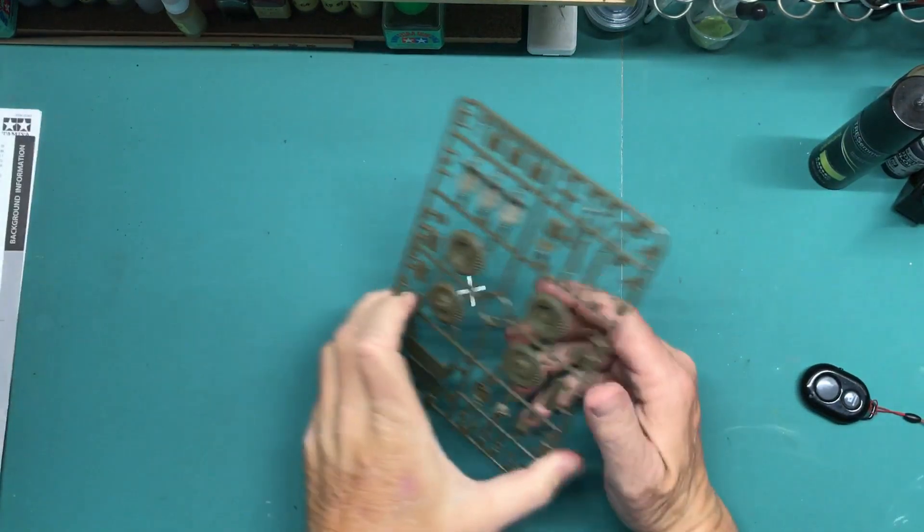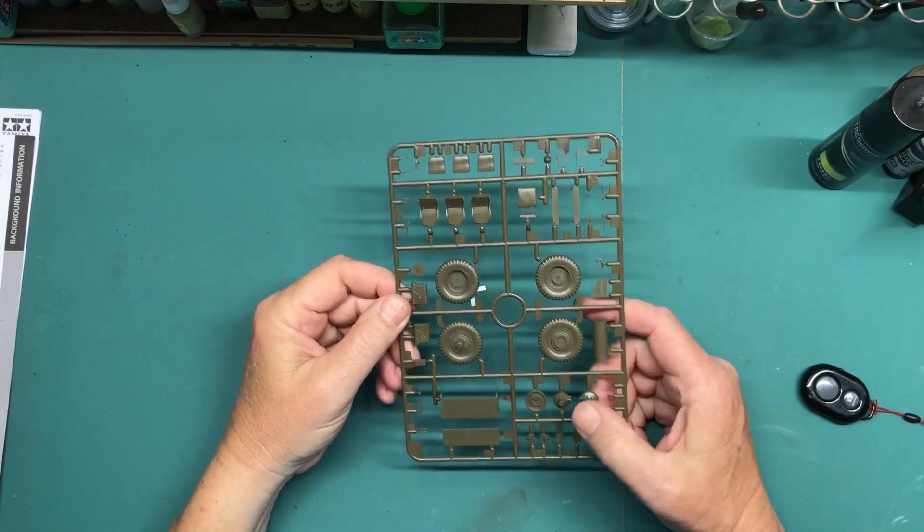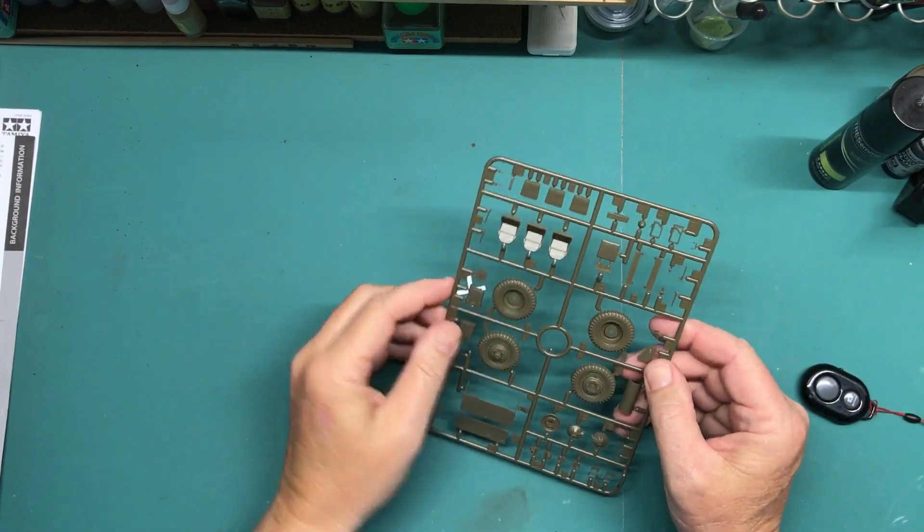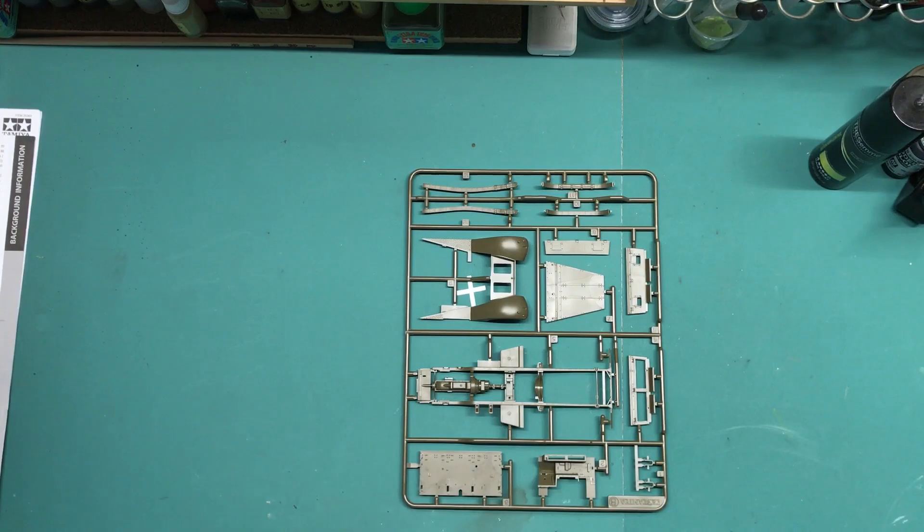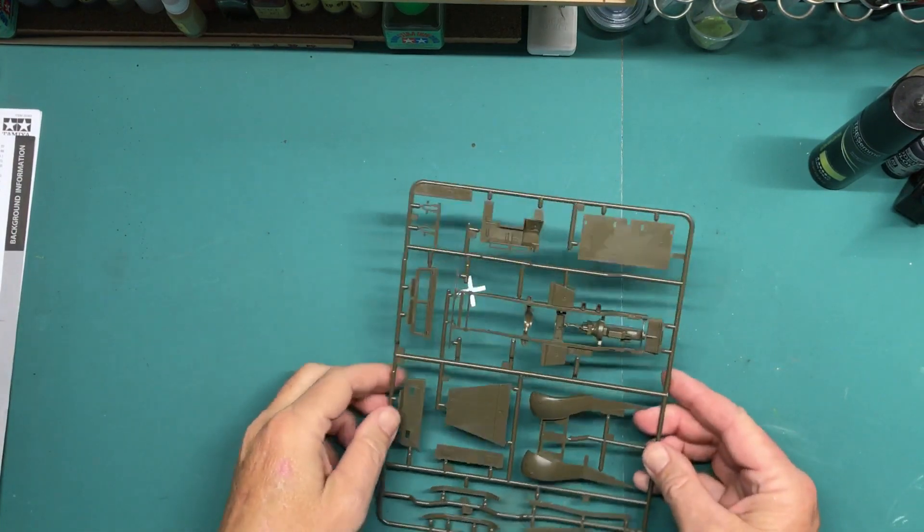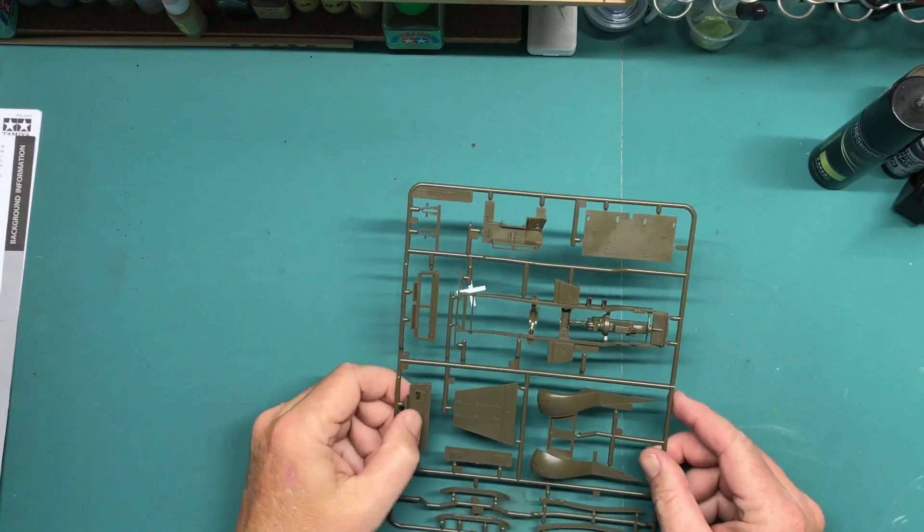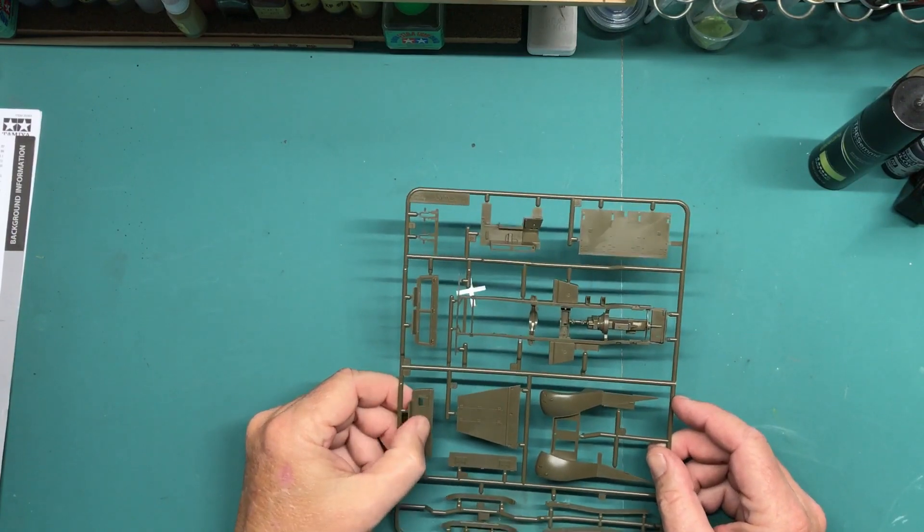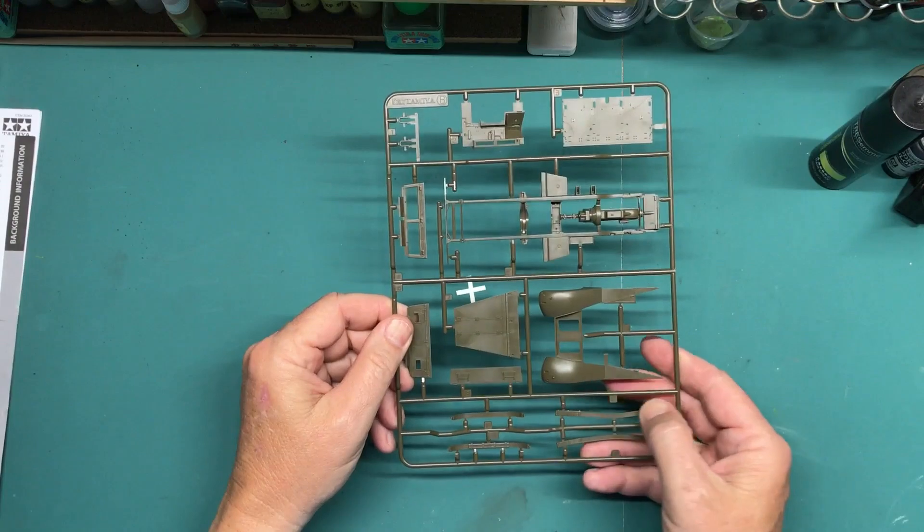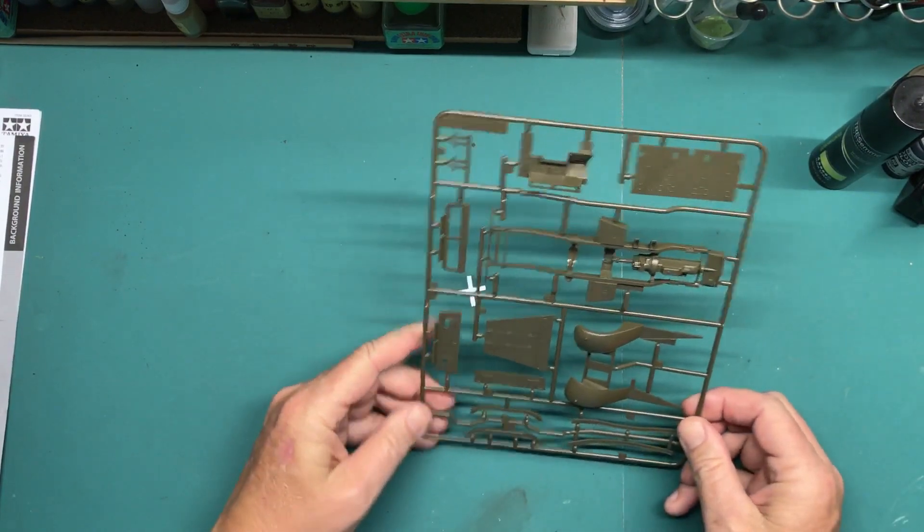Then we get two sprue A, which is that kind of thing. Then there's one sprue B, which is the chassis, fenders, hood, armored vision thing, back plate, the race for the machine gun mounts.